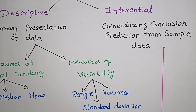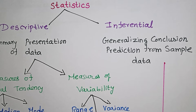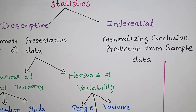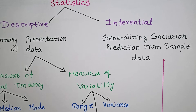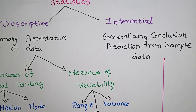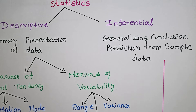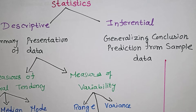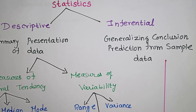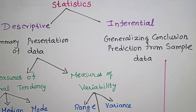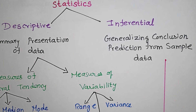Inferential statistics involves generalizing conclusions and making predictions from sample data about a larger population. For example, if only 30 people out of 1,300 members are interested in a disease, we use that sample data to make predictions about the large group. That is inferential statistics.